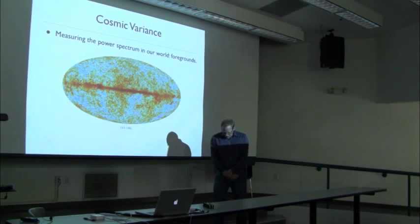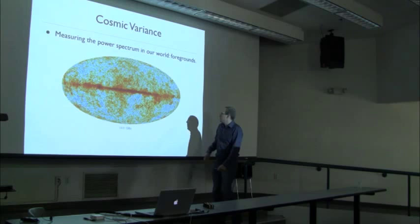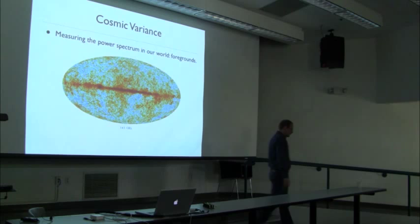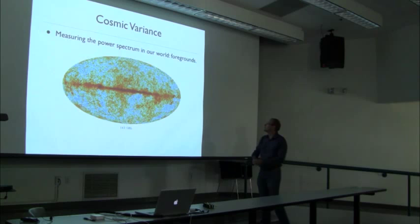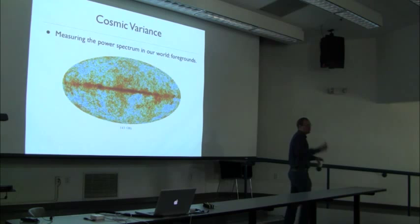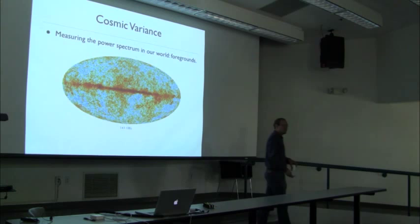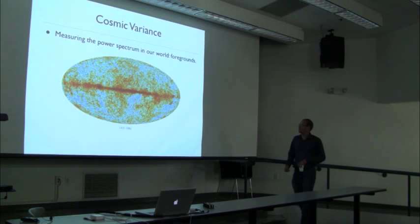In the real world, the first problem in measuring the power spectrum is dealing with foregrounds: the galaxy, but also clusters of galaxies that can distort CMB photons, and point sources emitting across frequency ranges — all of this obscures the primordial signal. That said, there's a huge wealth of interesting astrophysics in these foregrounds. For us they're garbage, but for astrophysicists there's a lot of interesting science there.